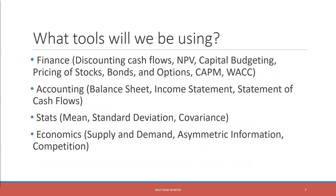We're going to be using discounted cash flows, NPV, capital budgeting, and many of the concepts you probably saw in Finance 101. We'll also be using accounting, specifically balance sheets and income statements. You're going to be making pro forma financial statements — that's just a fancy way of saying you'll project how you expect the firm to perform next year. We'll also be applying statistics, specifically mean, standard deviation, and covariance. Mean will be the way we estimate expected cash flows. And then obviously economics — supply and demand, asymmetric information, competition, moral hazard — all of it will be at the forefront of what we're working on.